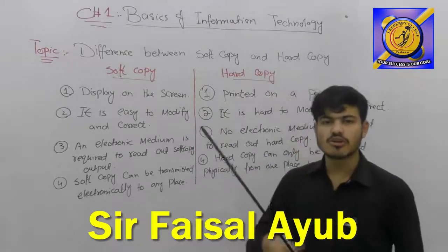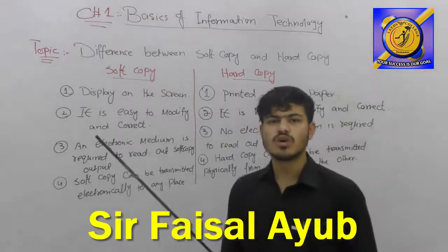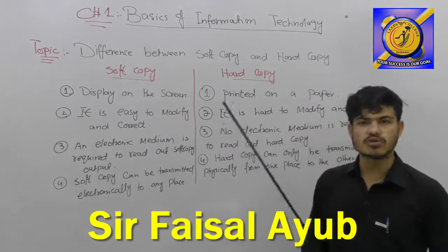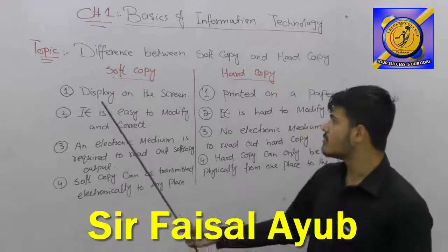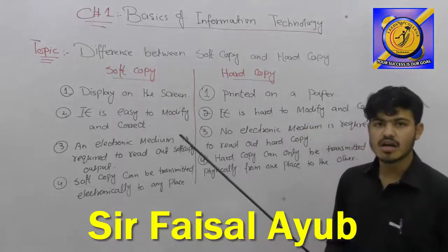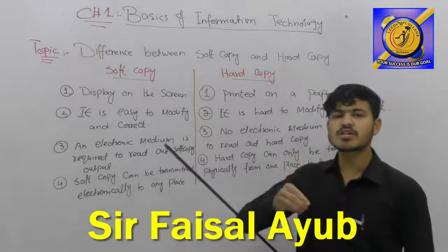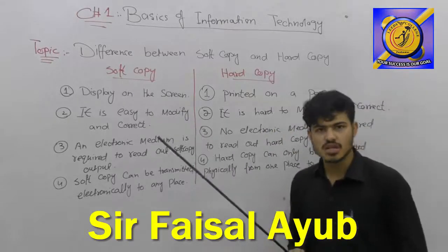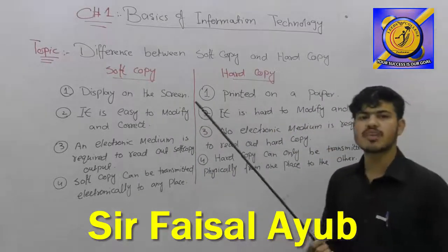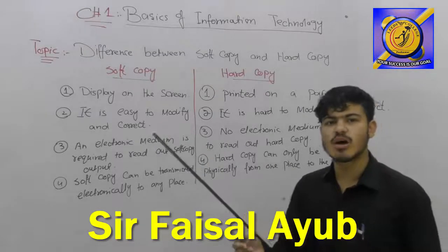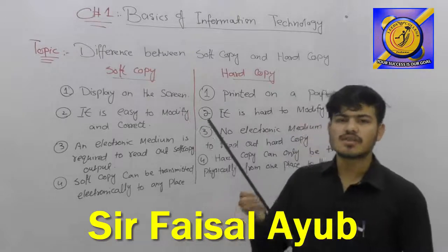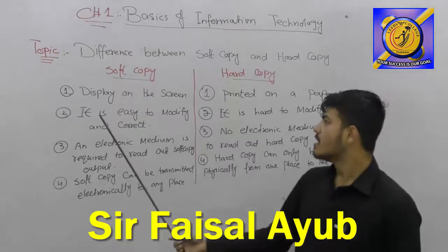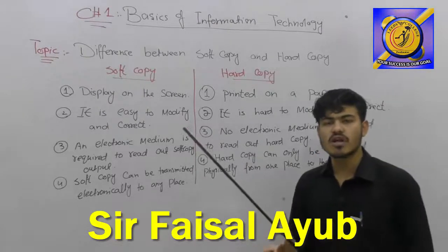For example, if you create a document in MS Word and then print it, that printed page is your hard copy. If the same document remains on your system screen — displayed on the LCD or monitor — that is your soft copy. The output on the paper via printer is hard copy; the output displayed on screen is soft copy. Soft copy can be easily modified.